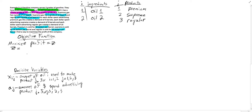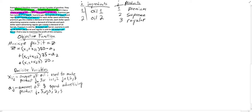Now we can go back to our maximizing profit. Z is going to equal (X_11 + X_21) times $50 per barrel, minus the amount of money spent advertising for premium. Then we add (X_12 + X_22) times $35 per barrel, minus the advertising for supreme. And then we add (X_13 + X_23) times $30, minus the advertising money spent on regular.